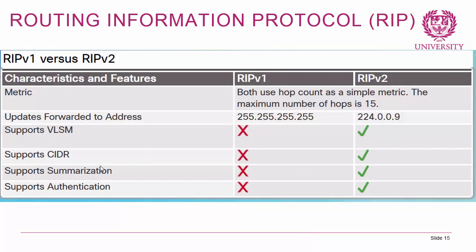For historical reasons, let's have a brief overview of RIP versions 1 and 2. The metric used by RIP is hop count — how many routers there are between the source and destination network. RIP is not very scalable because the maximum number of hops is 15, so there cannot be more than 15 routers between the source and destination network. RIP version 2 supports VLSM, classless interdomain routing, route summarization, and authentication. RIP version 1 does not support these and is to be considered deprecated.